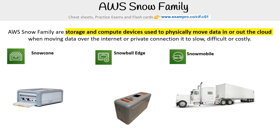Originally there was just Snowball, and then they came out with Snowball Edge. Edge introduced edge computing — that's why there's 'edge' in the name, though pretty much all of these devices now have edge computing. They do individually come with some variants. Snow Cone comes in two sizes: eight terabytes of usable storage and fourteen terabytes of usable storage.